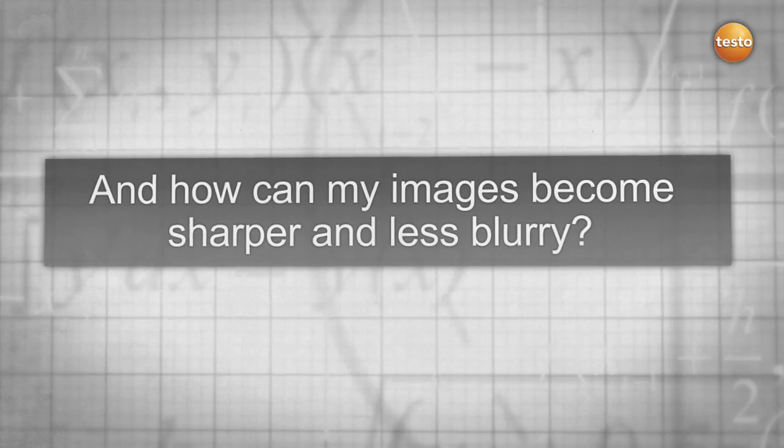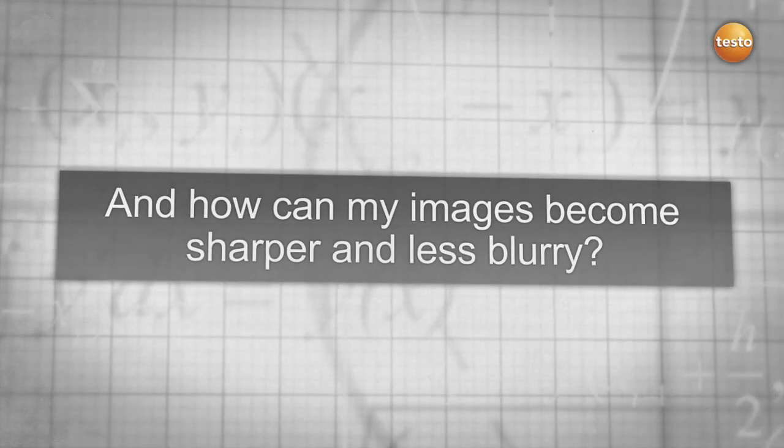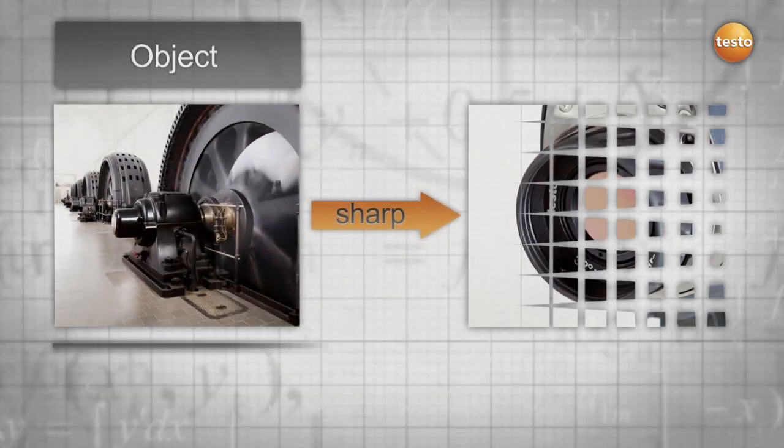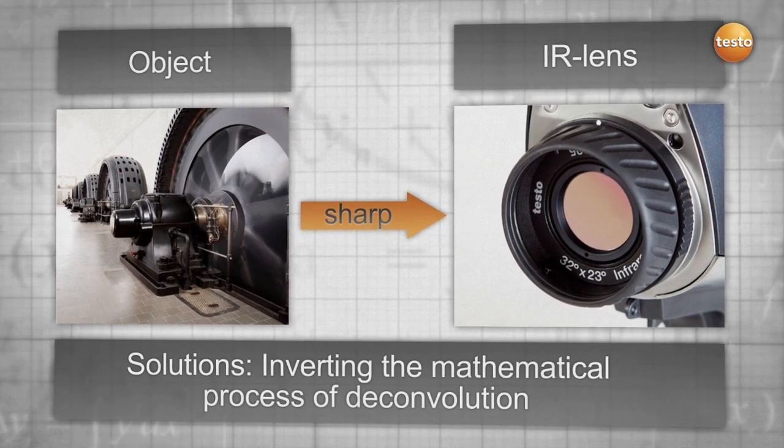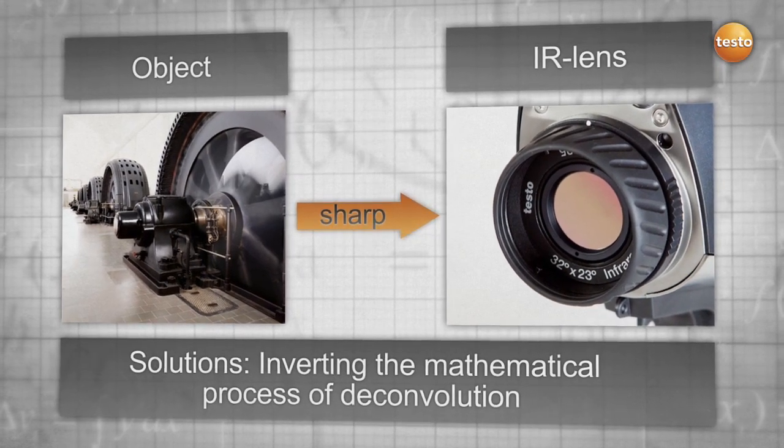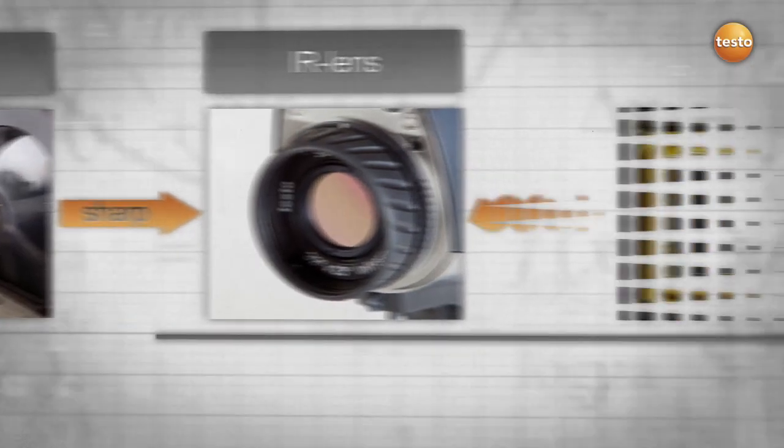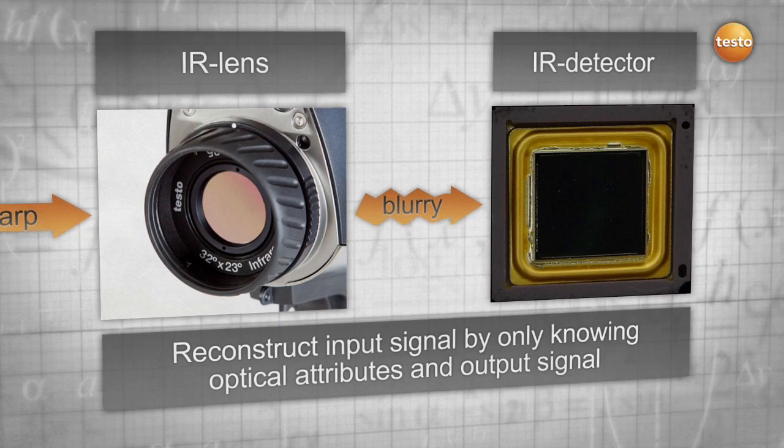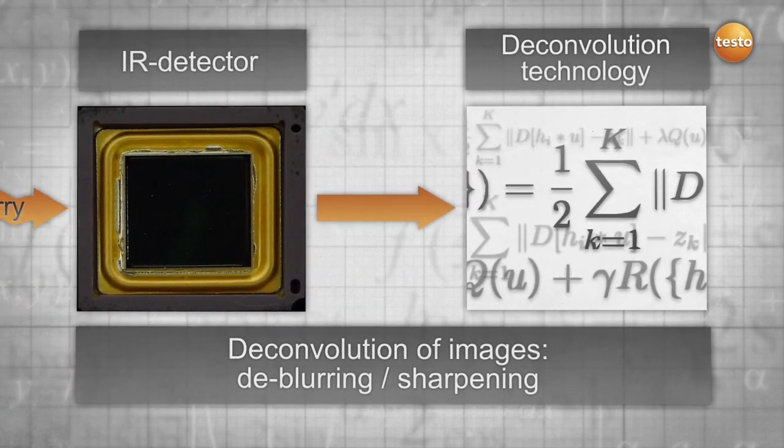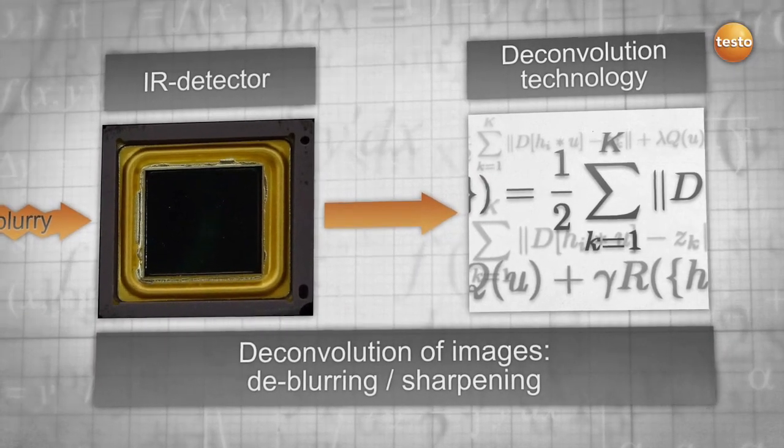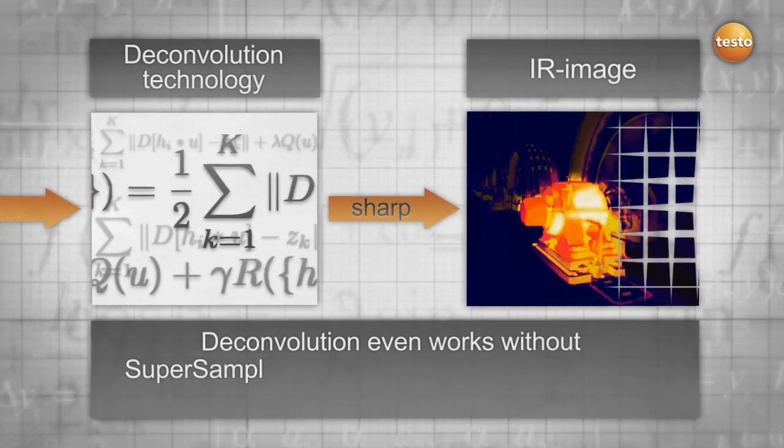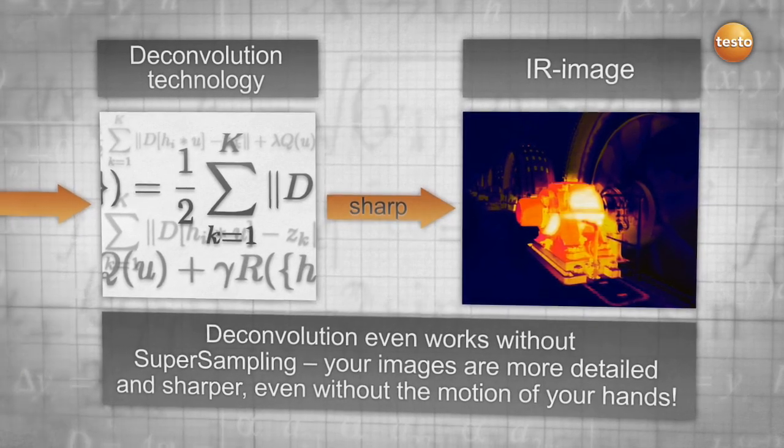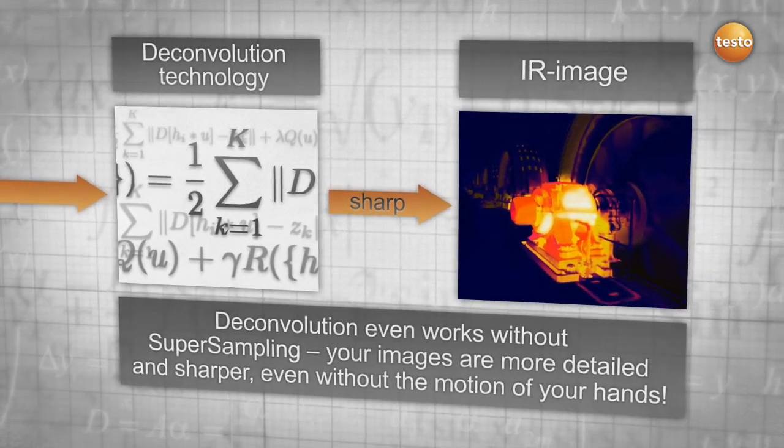Another challenge is to get clear and sharp pictures out of your measurements. With the help of deconvolution, we are able to reconstruct the input signal by recalculating the output signal with the optical attributes of the lens. Your images are therefore less blurry and sharper. And did you know that this technology works independent from supersampling? Your images are more detailed and sharper, even without the motion of your hands.